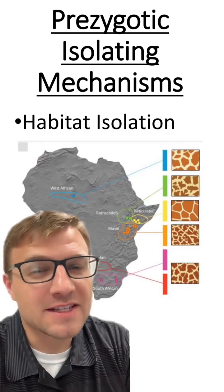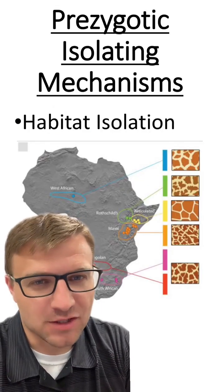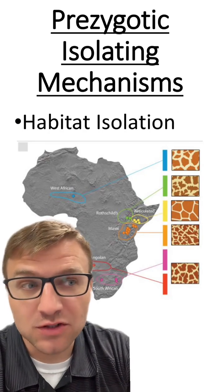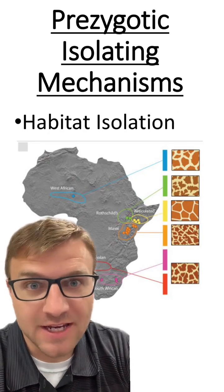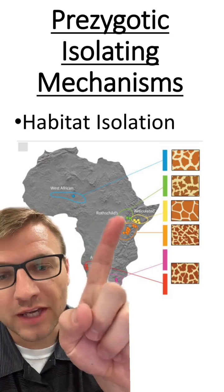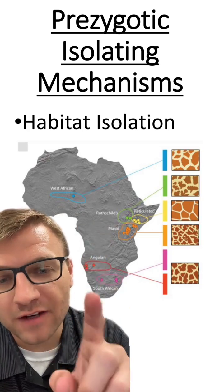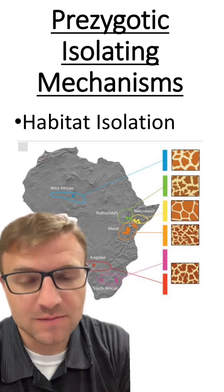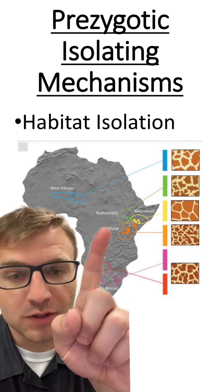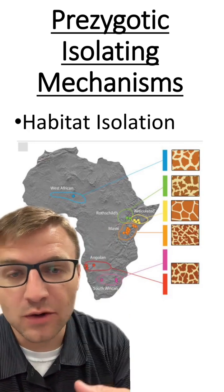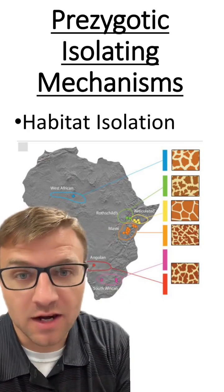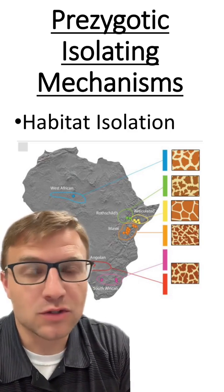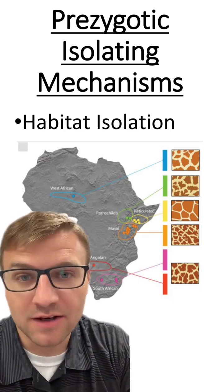The first is habitat isolation. These are when groups of organisms or populations are just in different habitats. For example, all these different locations within Africa and the giraffe populations. So giraffes from one area won't reproduce with another area, making it a pre-zygotic isolating mechanism because they're not going to be able to reproduce together.